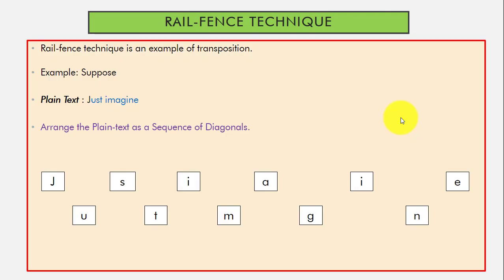Here you can see the example of this technique. Suppose we have a plain text that is just imagine. So according to the algorithm step 1, we will arrange the plain text as a sequence of diagonals. So you can see here, in this way, we will write the plain text done.